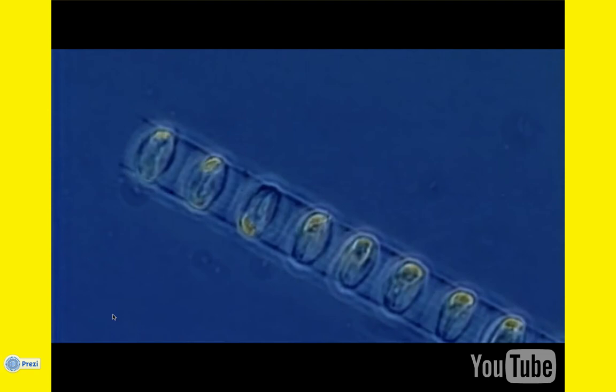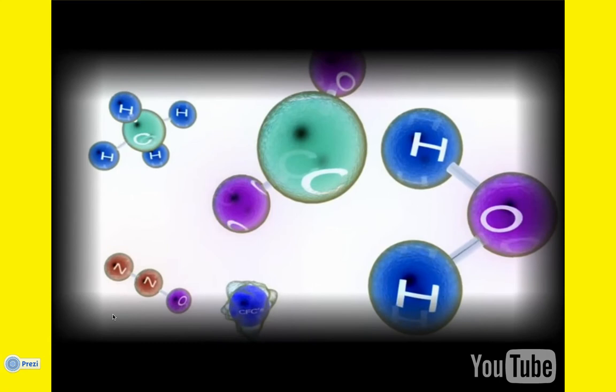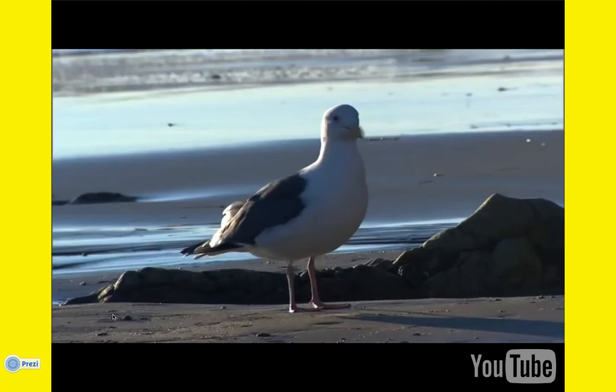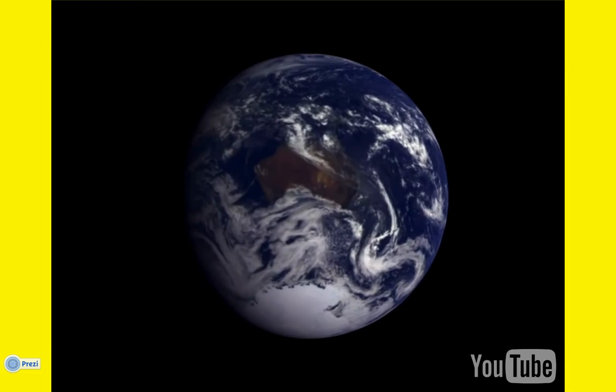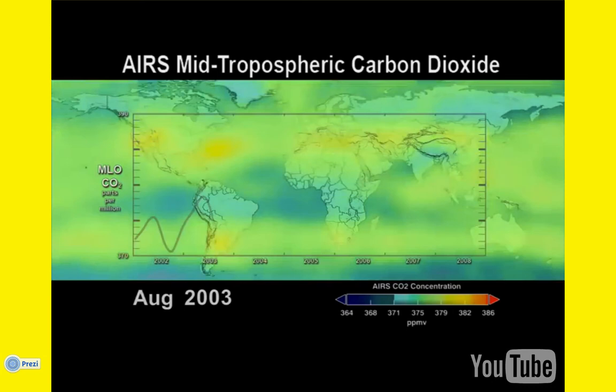Carbon is the basic building block of life, and these unique atoms are found everywhere on Earth. Carbon makes up the Earth's plants and animals, and carbon is also stored in the ocean, the atmosphere, and the crust of the planet. A carbon atom could spend millions of years moving through the Earth in a complex cycle. Understanding the carbon cycle and how it is changing is key to understanding Earth's changing climate.